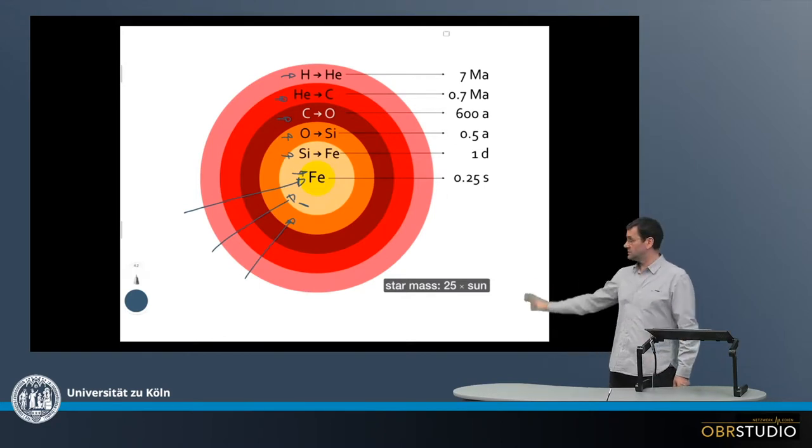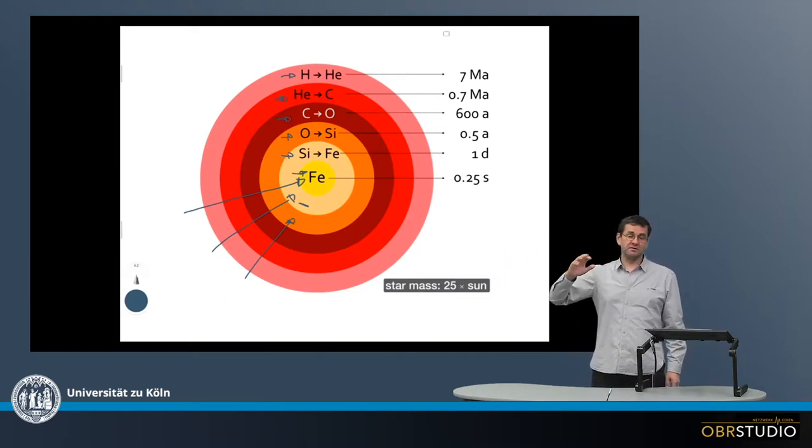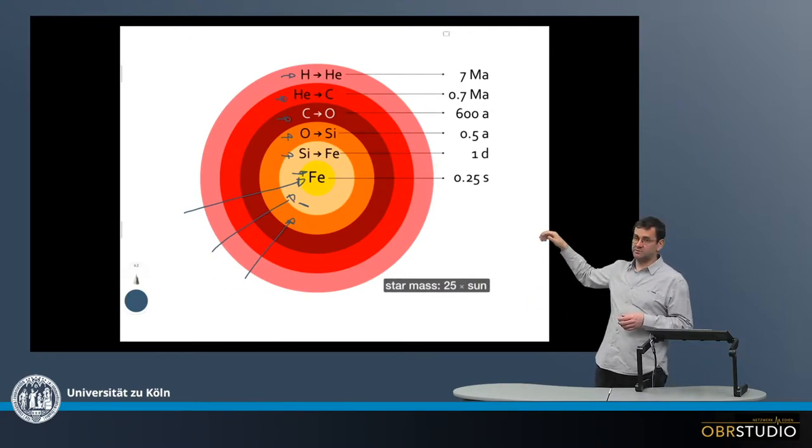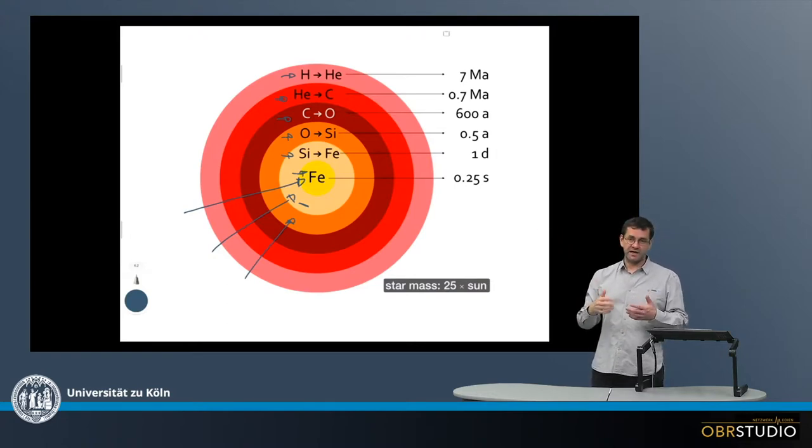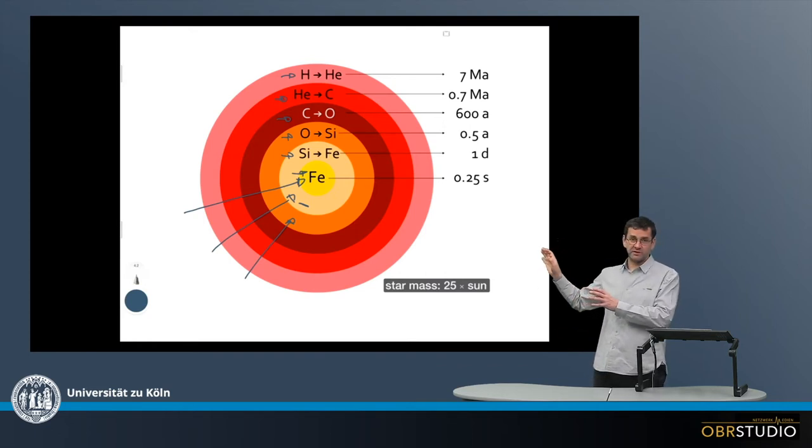But importantly, what is shown here, this onion shell structure, in which, in the various shells in the star here, the various elements, the various isotopes form. And it's then possible as well, from model calculations, to calculate in which state, at which time, in which shell, the various isotopes form, and in what kind of ratios they form. And this is quite important to understand, for example, the contribution of pre-solar grains to our solar system. So this is where there is the direct connection here.